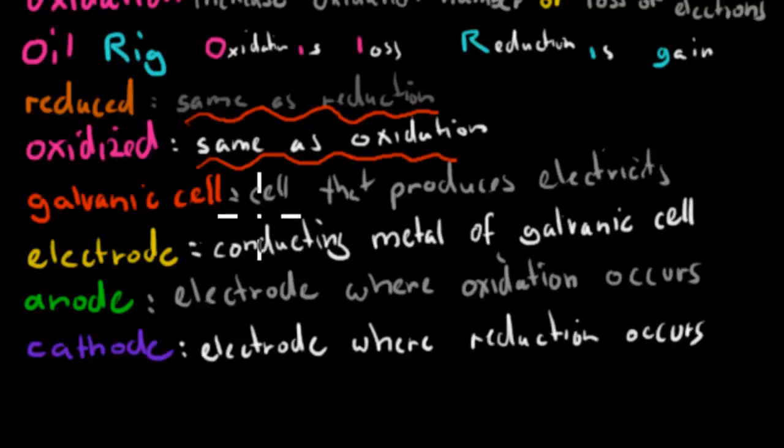Galvanic cell, that was a cell that produces electricity. So all your electrodes, electrolytes, salt bridge, all that together is your Galvanic cell. Electrode, that was your conducting metal of the Galvanic cell. So for example, a zinc electrode and a copper electrode. These metals help conduct electricity.